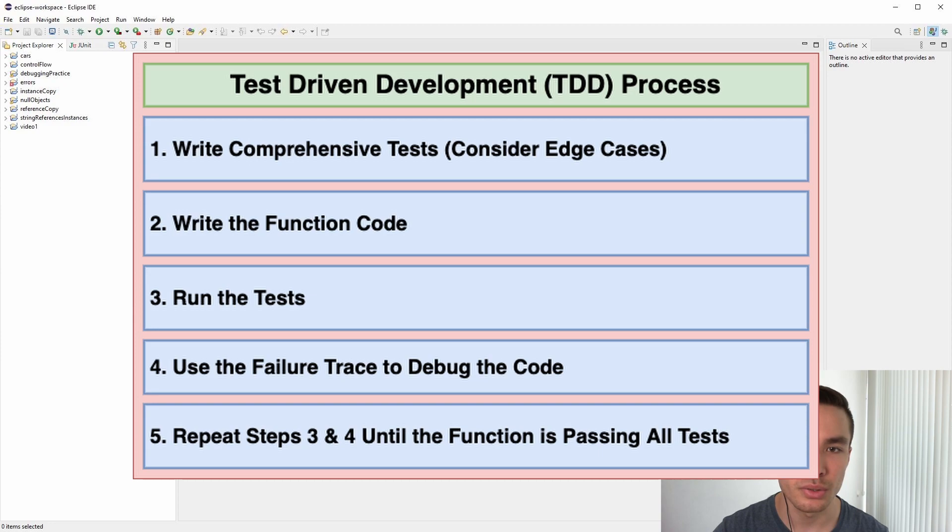It's important to note that the assurance test-driven development gives us, which is that our code is correct, is very dependent on how comprehensive the tests we write are. So it's very important to always think about the many input cases, including edge cases, we might have and choose a comprehensive sample of tests.